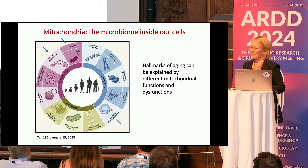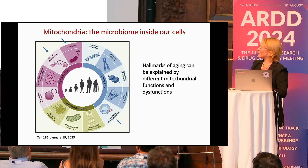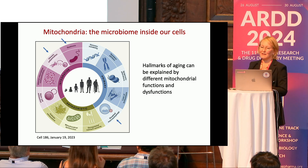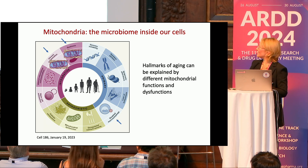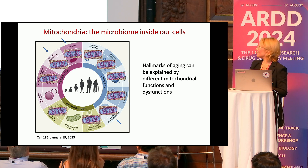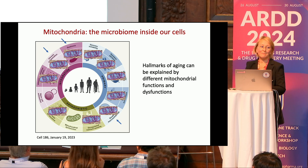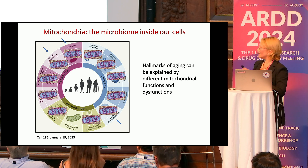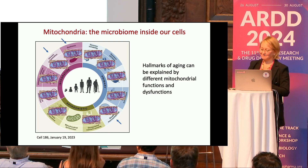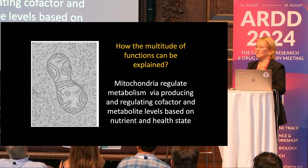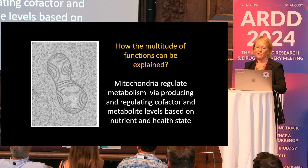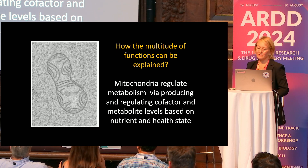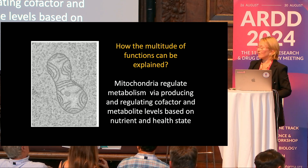Mitochondria are really the microbiome inside our cells. When we saw the microbiome talk, it was clear that the microbiome is explaining all the different signs of aging — but when we start to look at different kinds of mitochondrial dysfunctions, actually every single point can be explained by some kind of mitochondrial function or dysfunction. Mitochondria regulate many metabolites, different kinds of cofactors, and switch depending on nutrient and health state.